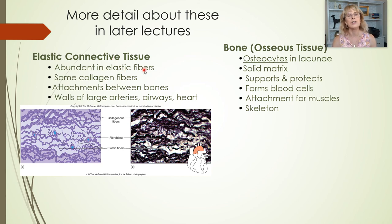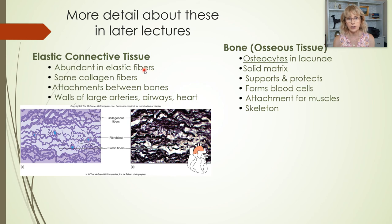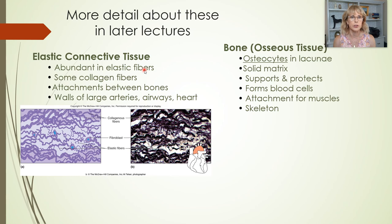The reason arteries can do that is because they have a lot of elastic connective tissue with abundant elastin fibers. Elastic connective tissue still needs collagen because elastin is not strong enough on its own for most connective tissues. It is found particularly in our larger arteries.